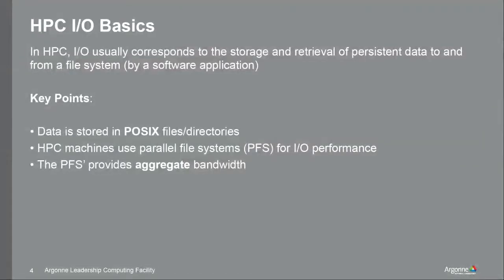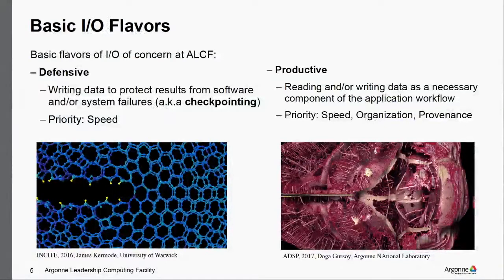HPC IO basics — we're talking about the storage and retrieval of persistent data to and from a file system from a software application. A couple of key points: data is stored in a POSIX convention, HPC machines use a parallel file system, and the parallel file system gives us an aggregate bandwidth. These are basics, but it's worth getting everybody on the same page.